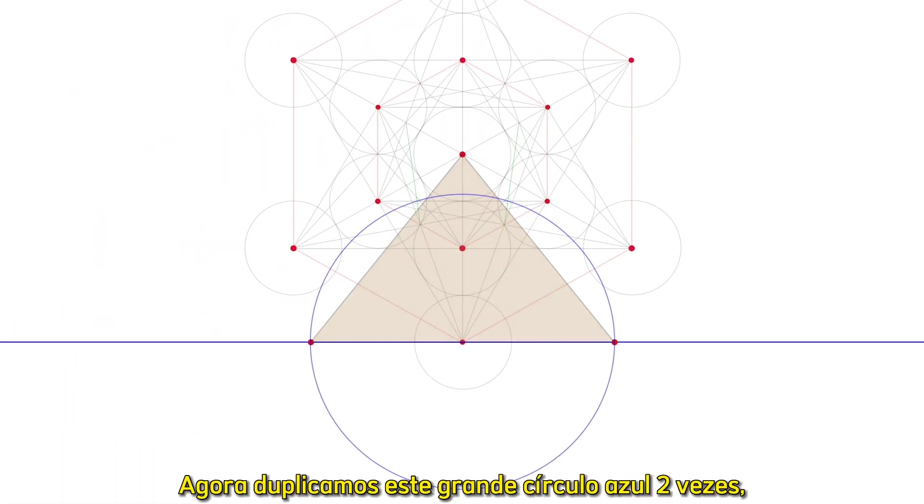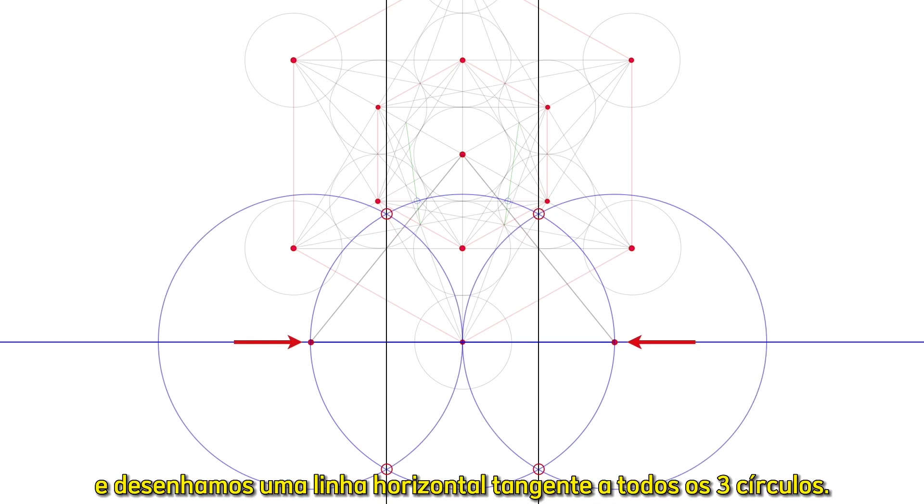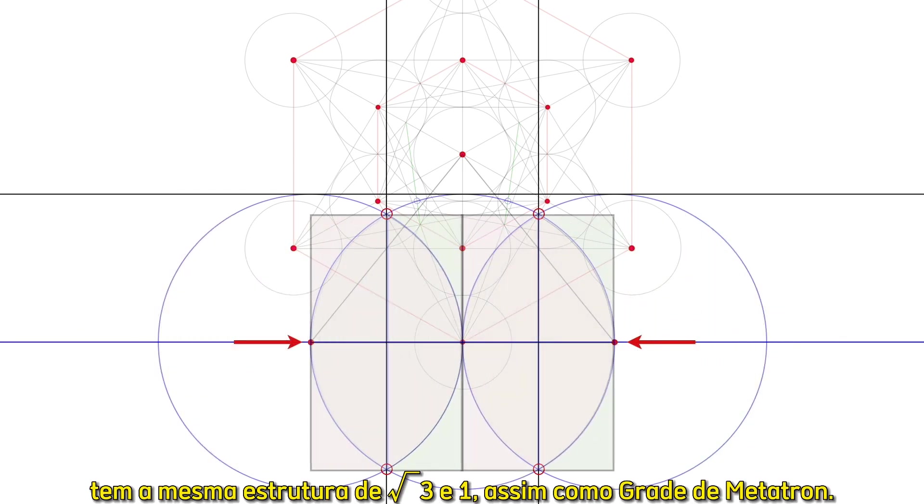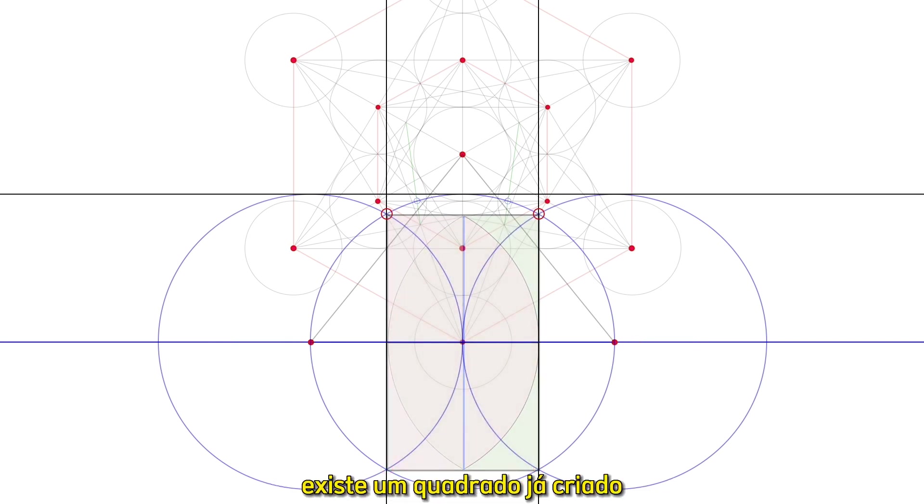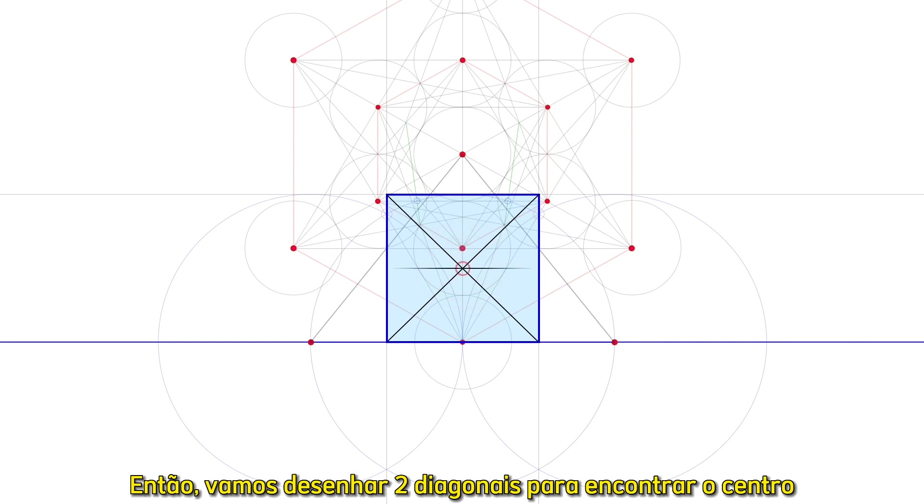We now duplicate this large blue circle twice. Mark their vesica piscis points and draw a horizontal line tangent to all three circles. The vesica piscis, you'll recall, has the same root 3 to 1 structure as Metatron's grid. And as we can see, there is a square already created that has the same width as the vesica. So let's draw two diagonals to find the center of that square.